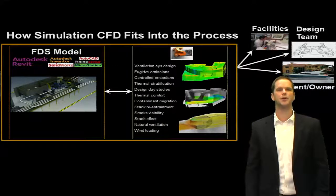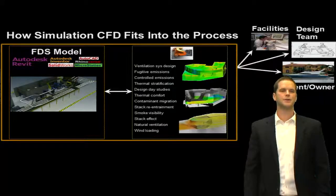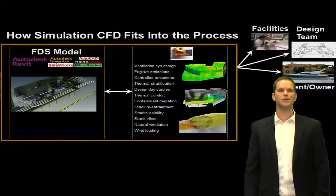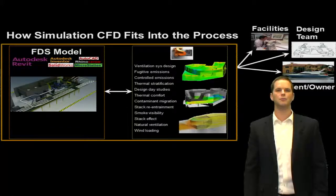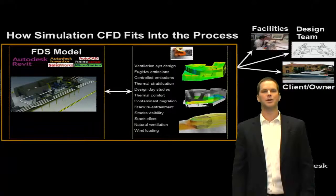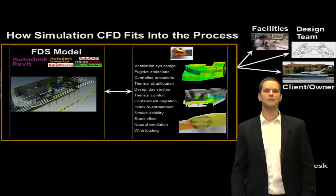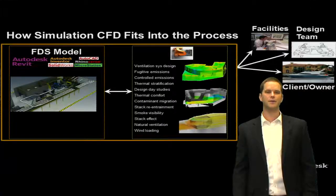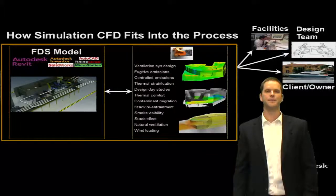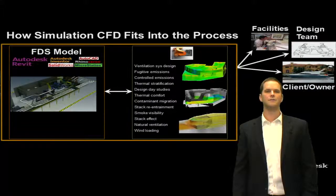So, how does Simulation CFD fit into the process? It all starts with a CAD or BIM model. You start with your FDS model, pull that into Simulation CFD, and then you can run ventilation system design studies. You can look at fugitive or controlled emissions, thermal stratification, design day studies, thermal comfort, contaminant migration, stack re-entrainment between buildings, smoke visibility in the event of a fire or pollution within the factory, stack effect, natural ventilation, and wind loading on the exterior. Then share these results with the facilities team, your internal engineering design team, or the client or owner.